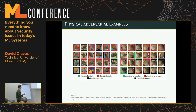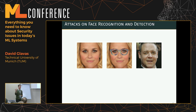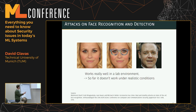People also generated adversarial examples in the form of glasses. By constraining the optimization to only modify pixels in a specific region, they could interpret that as glasses, print them out, and wear them in front of commercial face recognition systems like Face++. This worked really well in a lab environment, but so far doesn't work under realistic conditions because the camera moves, viewpoints change, and lighting changes.